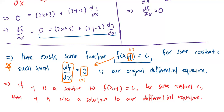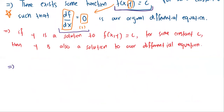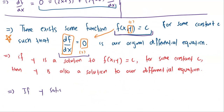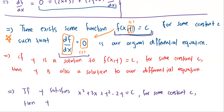What does that mean? We can go from a calculus problem — trying to find a solution to a differential equation — to an algebra equation: can we solve the expression f(x, y) = c for y as a function of x? For our problem specifically, if y satisfies x² + 3x + y² − 2y = c for some constant c, then y is also a solution to our ODE.